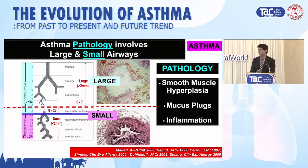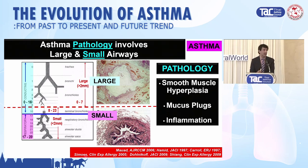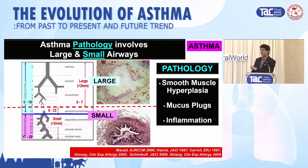We were all taught in medical school that asthma is a disease of the large airways with smooth muscle hyperplasia, smooth muscle hypertrophy, mucus plugs, and inflammation. But the pathologists have said: wake up, pulmonologist. Asthma is a disease of the whole airway tree. When you have a patient with asthma who comes to the ER, who goes to the intensive care unit, and who dies, when you do a post-mortem,